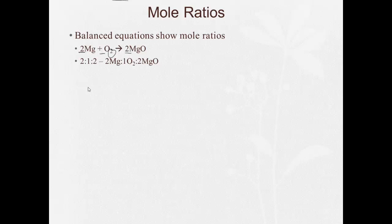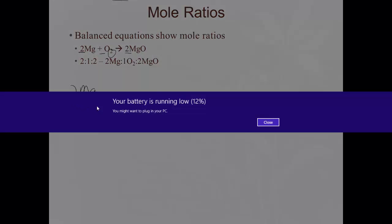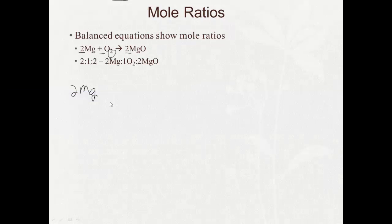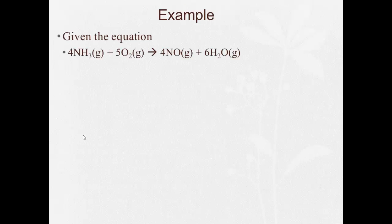So we could use this to say that there's 2 magnesium for every 1 oxygen, or 2 magnesium for every 2 magnesium oxide.